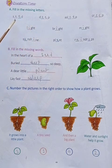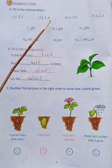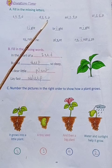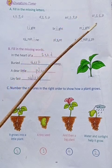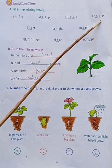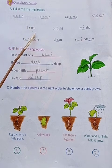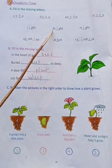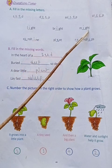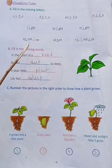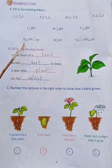First, let us see: S-double-E-D, seed means beej. Next, D-double-E-P, deep means gehra. A-S-L-double-E-P, asleep means soya hua. Next, C-R-double-E-P, creep means dhire dhire chalna. Next, L-I-G-H-T, light means Prakash. B-R-I-G-H-T, bright means ujjwal. M-I-G-H-T, might means sakna. S-U-N-S-H-I-N-E, sunshine means suraj ki roshni.